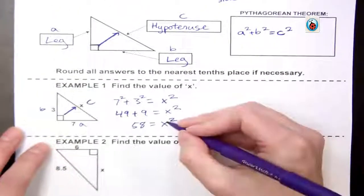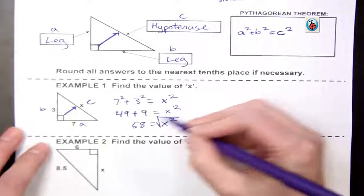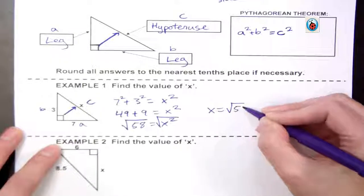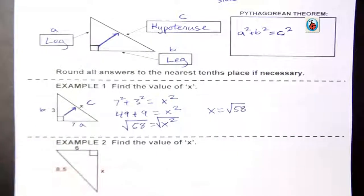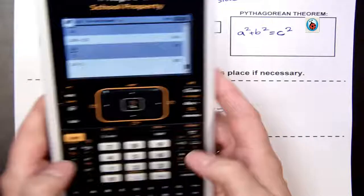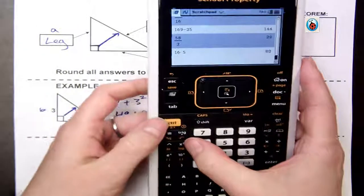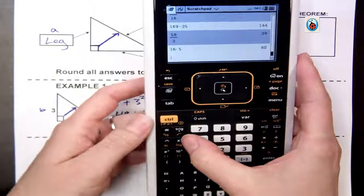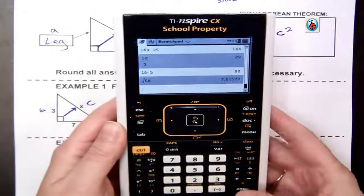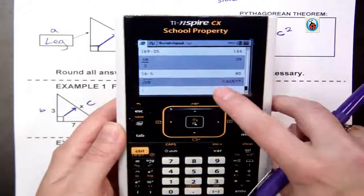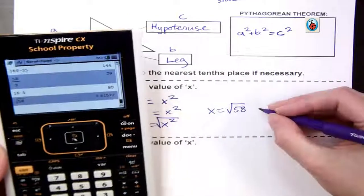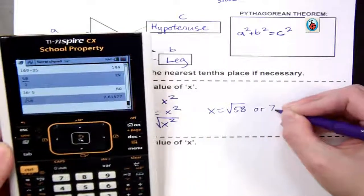The opposite of squared is the square root, so I take the square root of each side. X equals the square root of 58. Then I go ahead and type it into my calculator. To find the square root button, I use ctrl x squared, which puts that square root symbol for me. Type in 58, and it tells me 7.61577. I'm going to round that to 7.62.